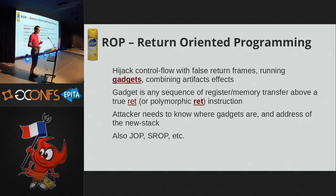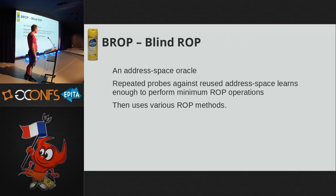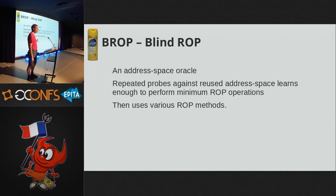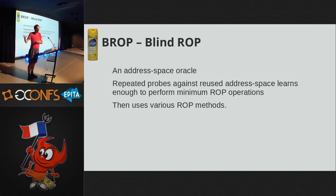There are other techniques called JOP and SROP which tie into this. Blind ROP is based on the observation about learning the address space needed for ROP - it's an address space oracle. It works specifically against address spaces which have been reused. For example, if you take a process and create a forked copy, it has the same layout. If this process dies and the parent keeps creating a new child with exactly the same memory layout, that's when BROP comes into play.